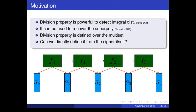As is well known, division property is powerful to detect integral distinguishers for many ciphers. In recent years, it has been proven useful in superpoly recovery in cube attacks. However, the division property is actually a property defined over the multiset rather than the ciphers themselves. In this paper, we are interested in whether we can develop a direct definition of it if we focus on the ciphers themselves alone, without other conceptions.